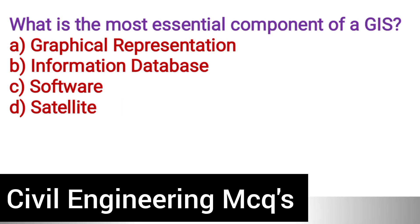Next question: What is the most essential component of GIS? Option A: Geographical representation. Option B: Information database. Option C: Software. Option D: Satellite. The correct answer is option B, information database.